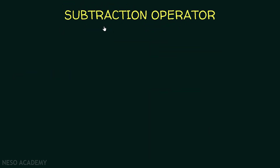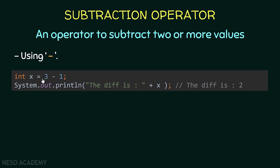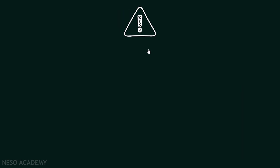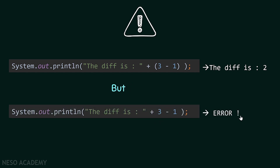Now let's talk about the subtraction operator. It is used to subtract two or more values, and we use the minus sign. For example, x is equal to 3 minus 1 and we are printing x, so we will see 'the difference is 2'. Also, we can display the difference directly — printing this string concatenated to 3 minus 1. However, if you try to use the minus operator without parentheses, you will get an error because the plus operator is treated as concatenation, and then we'd be subtracting 1 from a string. So to avoid this error, we have to use parentheses.